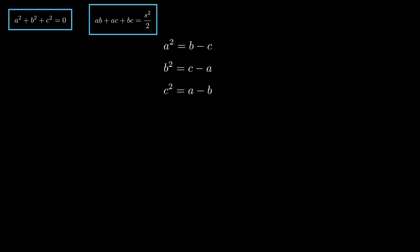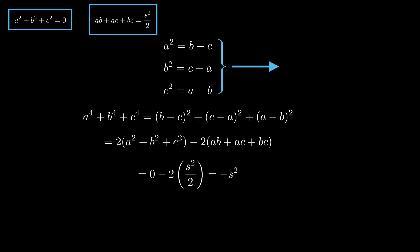Now, if we square each equation in the problem, add them together, and simplify, we can figure out A to the power of four plus B to the power of four plus C to the power of four. Using the results from the blue boxes, we find A to the power of four plus B to the power of four plus C to the power of four equals negative S squared.